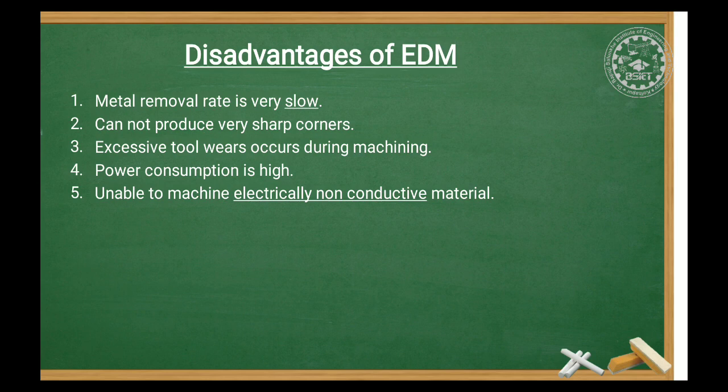A key disadvantage of EDM is that it is unable to machine electrically non-conductive materials. For example, if you use a plastic or wood material, the process will not complete the circuit, because in the EDM process the tool acts as anode and the workpiece acts as cathode. So the most important disadvantage is the inability to machine electrically non-conductive materials.